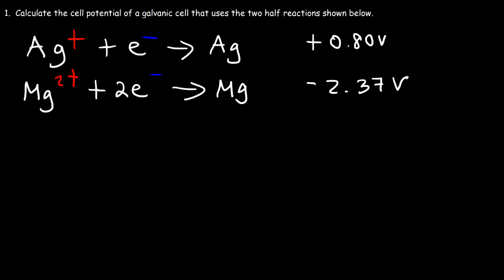In this video, we're going to focus on calculating the cell potential of galvanic cells and even electrolytic cells. For a galvanic cell, the cell potential has to be positive. Knowing that, how can we adjust these two equations in such a way to calculate the cell potential for a galvanic cell that uses these two half reactions?